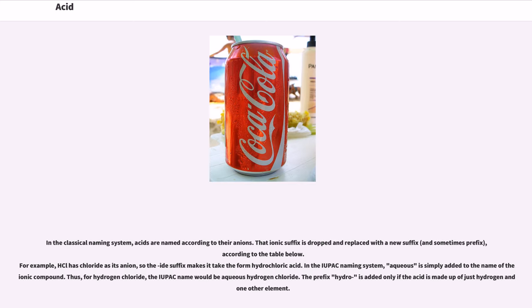In the classical naming system, acids are named according to their anions. That ionic suffix is dropped and replaced with a new suffix, and sometimes prefix, according to the table below. For example, HCl has chloride as its anion, so the -ide suffix makes it take the form hydrochloric acid. In the IUPAC naming system, 'aqueous' is simply added to the name of the ionic compound. Thus, for hydrogen chloride, the IUPAC name would be aqueous hydrogen chloride. The prefix 'hydro-' is added only if the acid is made up of just hydrogen and another element.